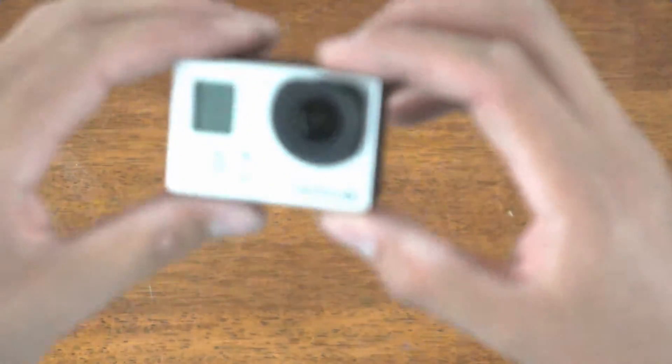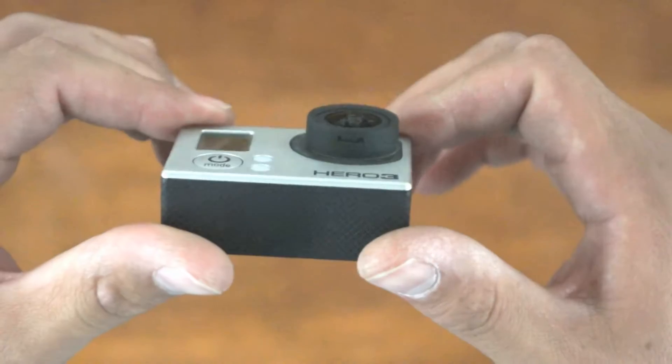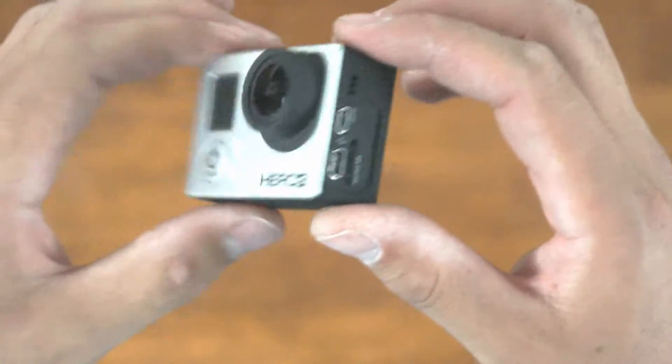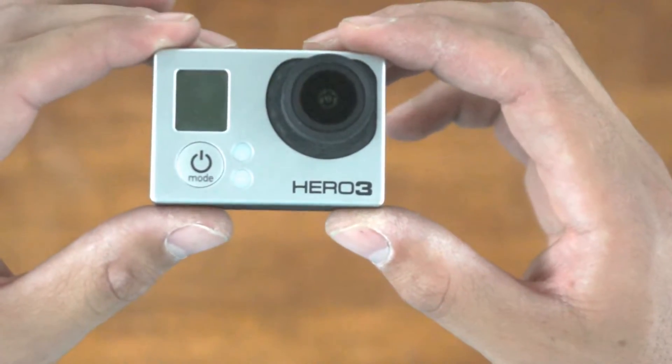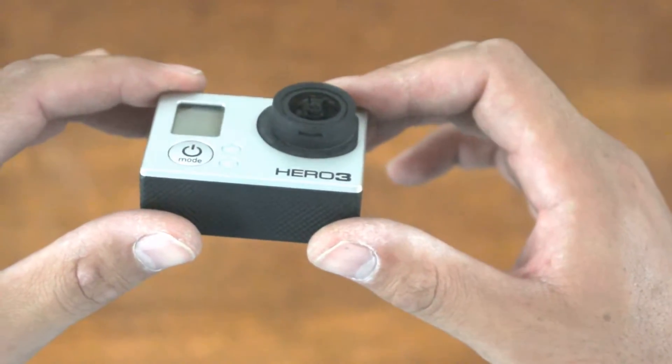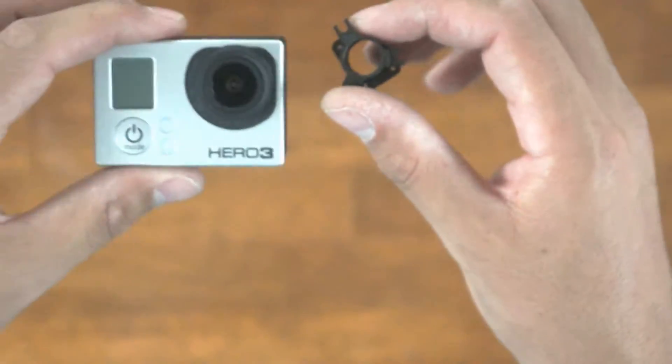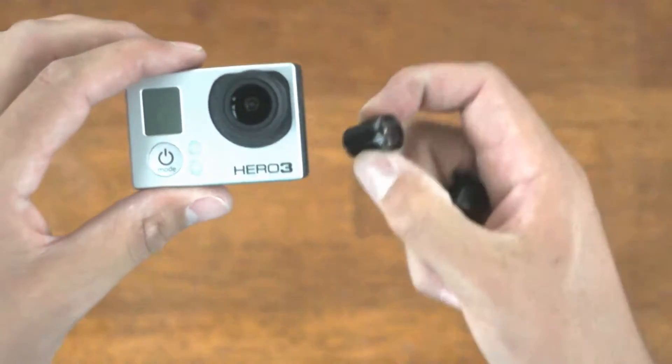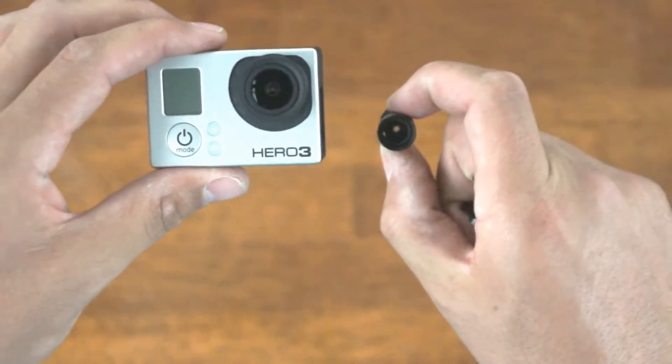And what we're going to demonstrate for you today is how to take a HERO3 Black. This is a stock camera, stock lens. And we are going to take this lens out and we're going to install a super mount so that you can put the 5.4 in there. Okay, let's get started.